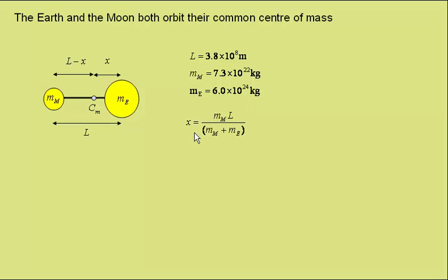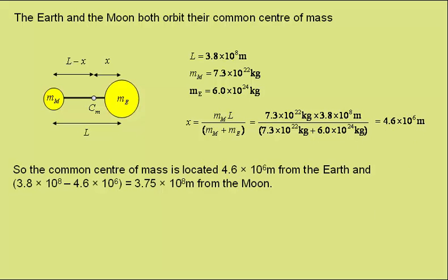So, using the expression found previously, we can now put in the numbers given above, and it gives x as 4.6 × 10^6 metres. So the common centre of mass of the Earth-Moon system is located 4.6 × 10^6 metres from the centre of mass of the Earth.